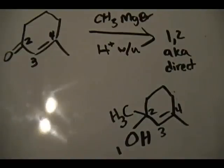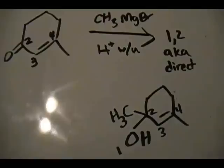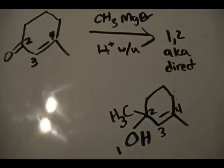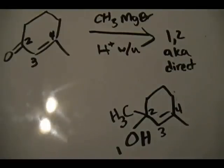That covers the last tidbits of alpha-beta unsaturated aldehydes and ketones, and I think this concludes the discussion of aldehydes and ketones in general — there might be one or two topics left to check. So again: determine if your conjugated system is set up properly, number it starting with oxygen, look at the reagent — Grignard or DIBAL-H gives 1,2; Gilman gives 1,4 — then use the steps shown to draw the product. Thank you guys for watching, and stay tuned until next time.